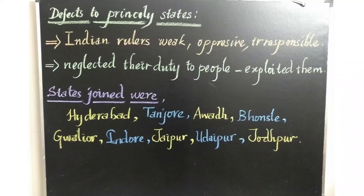We should not be irresponsible in our life, children. Discipline leads you to a successful life. Irresponsibility leads you to failure and delay in all your works. So from your childhood days, be responsible in all your duties.